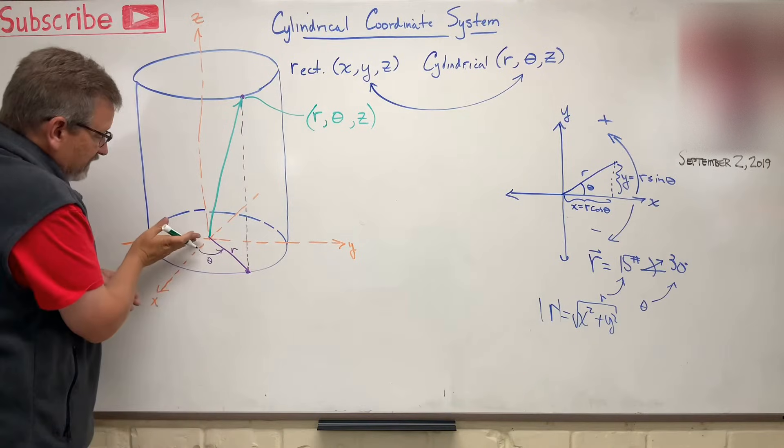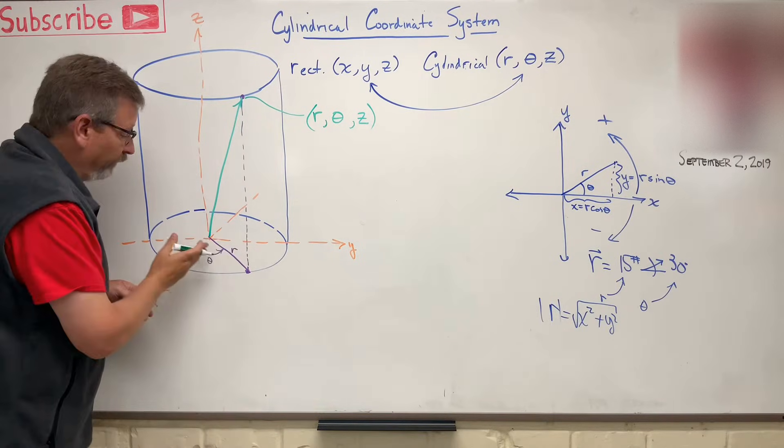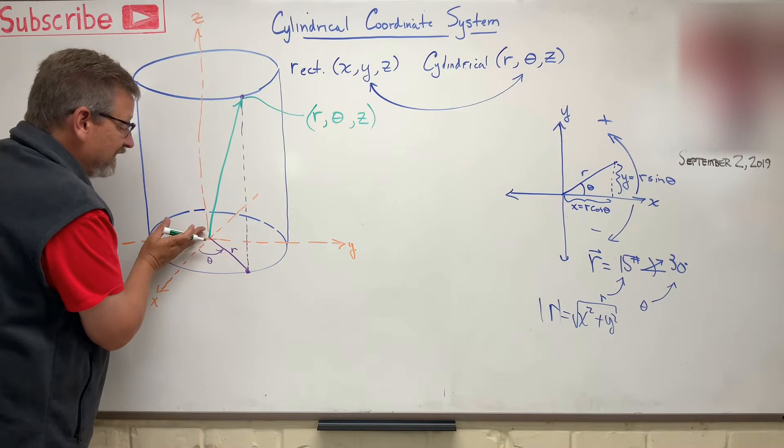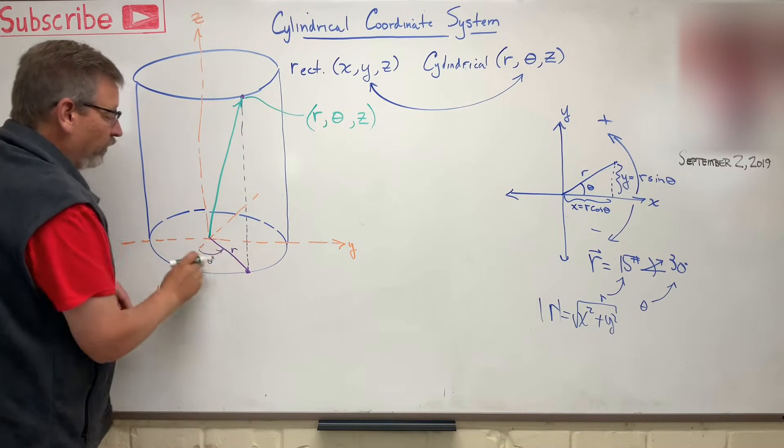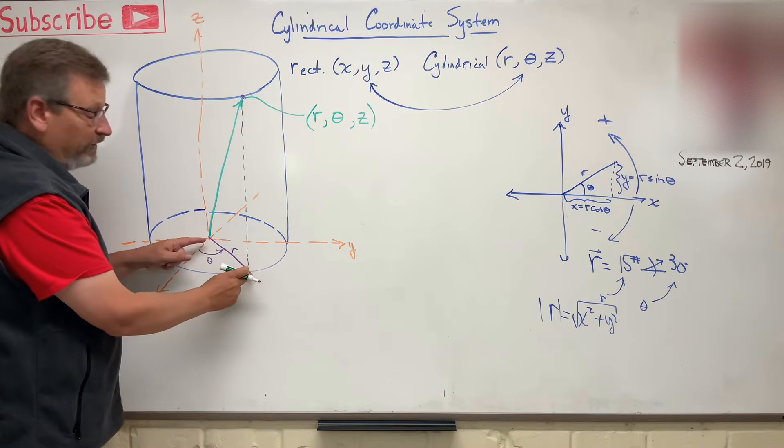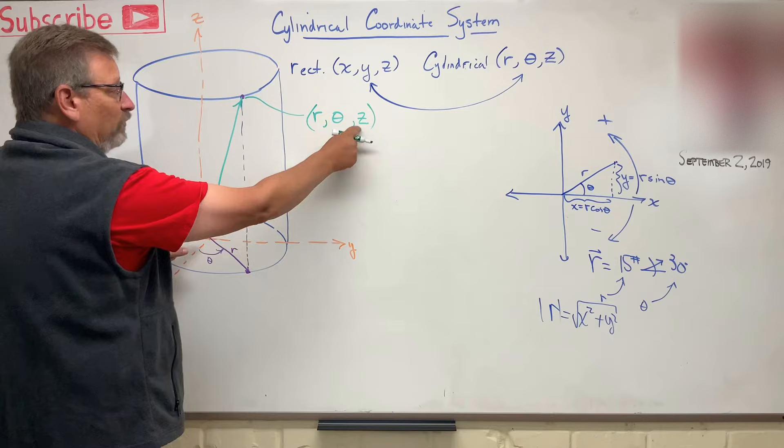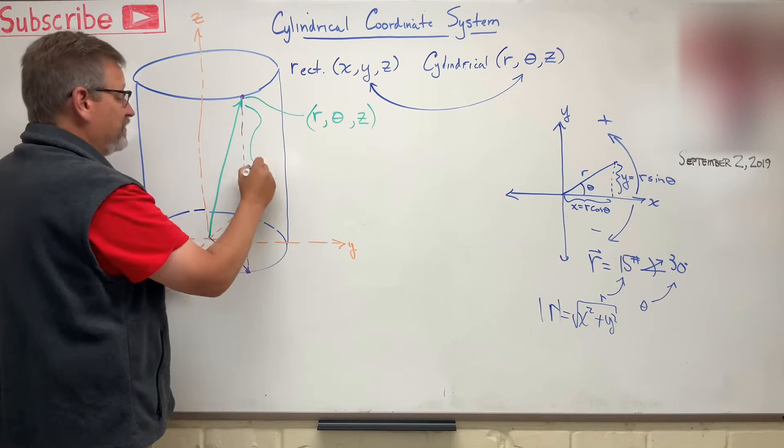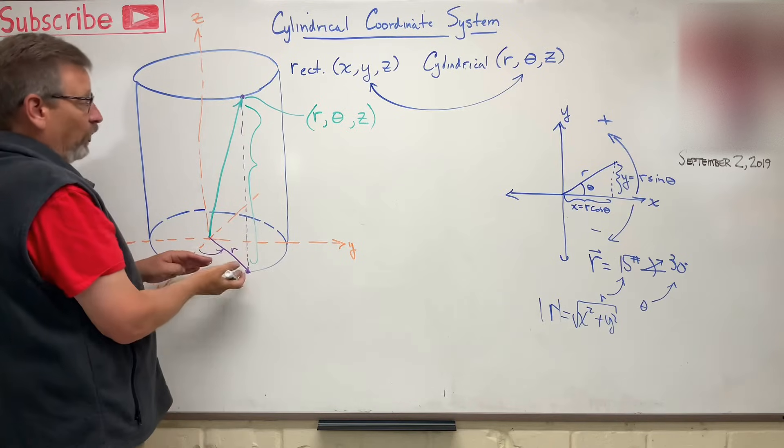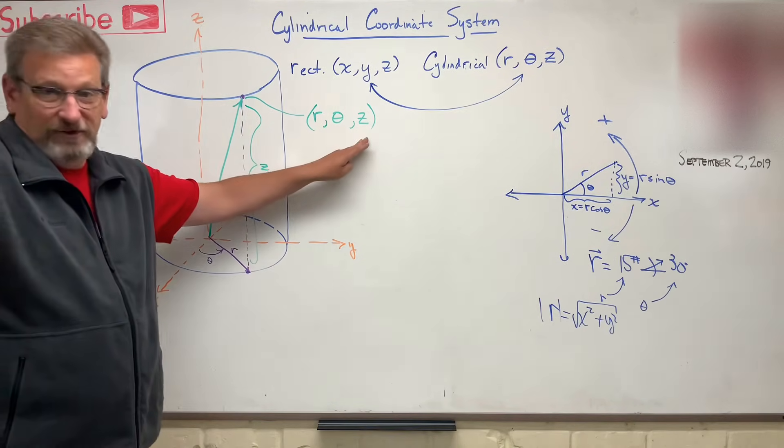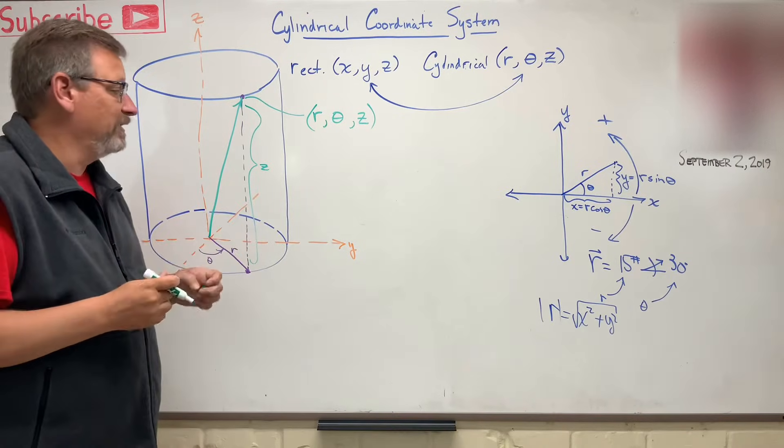r is this swing angle on the floor. We used to call that feedback in statics, but here it's referred to as theta. So that swing angle on the floor, r is the length of the vector or the radius of the cylinder there. And then z, guess what z is? It's just, well, it's just z. It's just how far off the floor is it. So z is easy to remember because it is just z. It's a distance in the z direction.